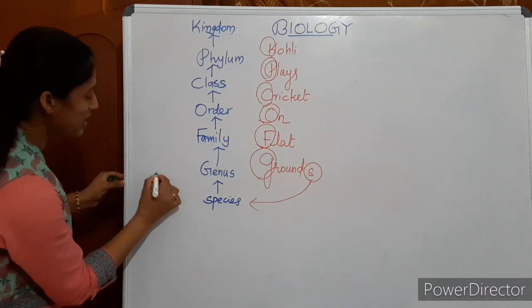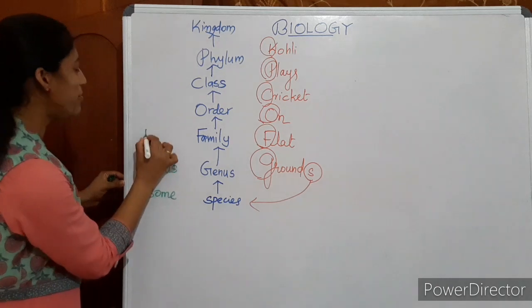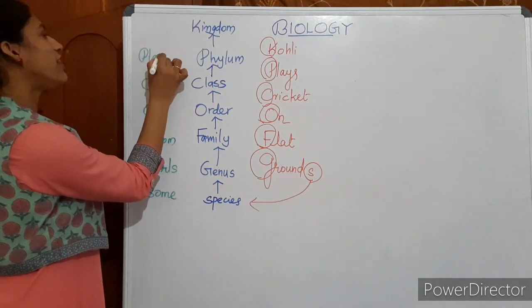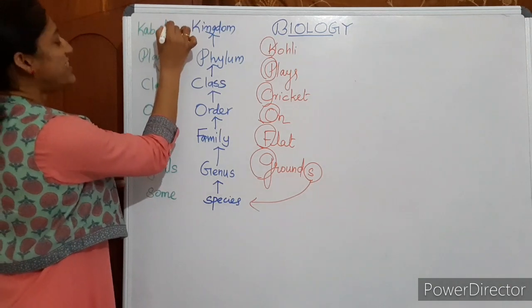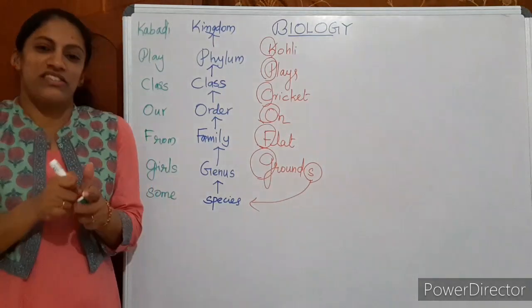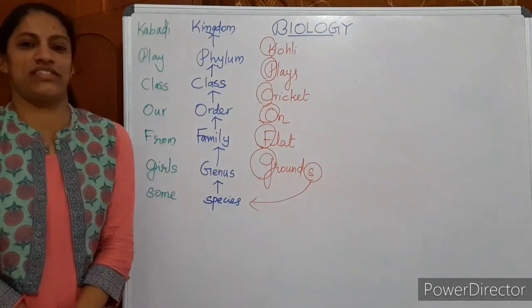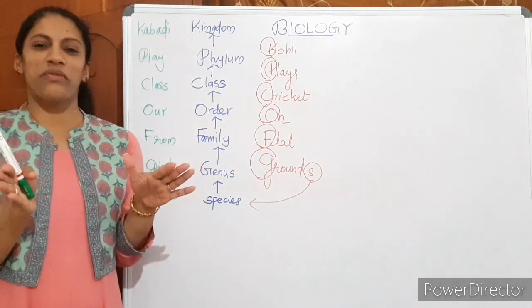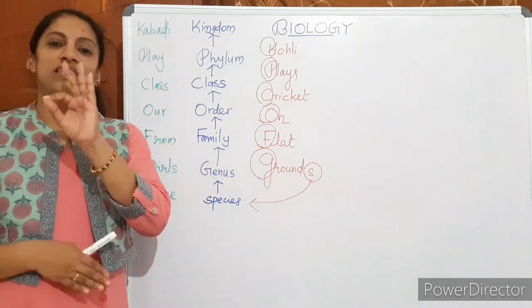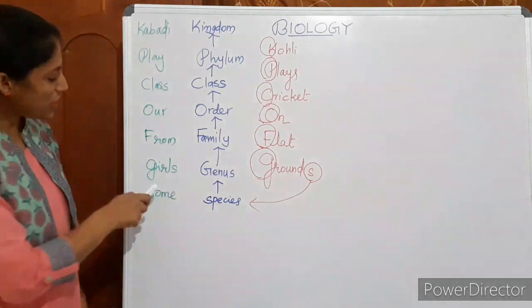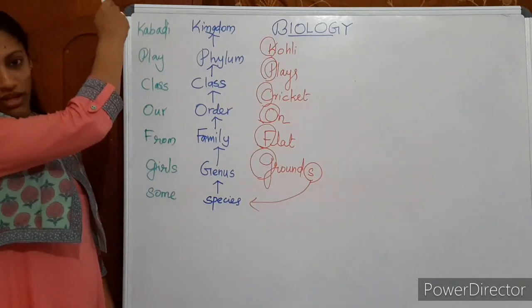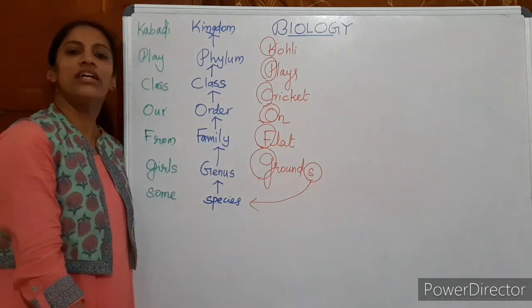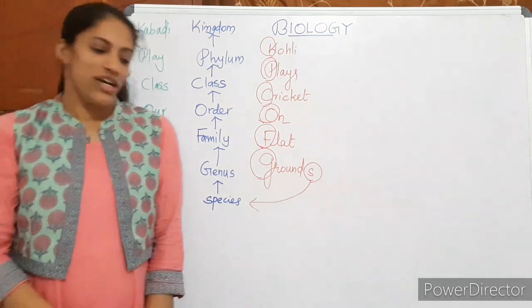Some girls from our class play hockey. See. Similarly, you can develop any interesting sentence using these first letters. Anything. Do not publish it. You can keep in mind. It is not compulsory. See that there should be a meaning. In which way you can remember that? That way you develop a chord and study if it is difficult to memorize these things in the order. Some girls from our class play hockey. From here to there. This is the thing. S, G, family F, order O, C class, P phylum, K kingdom. So I think this is okay for you.